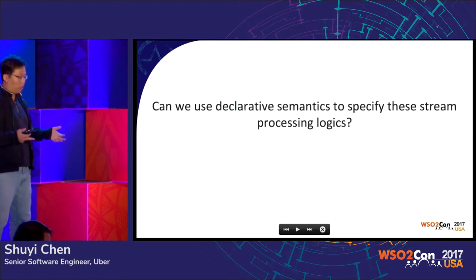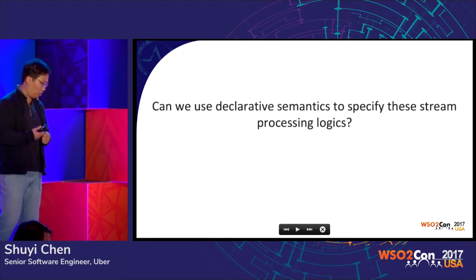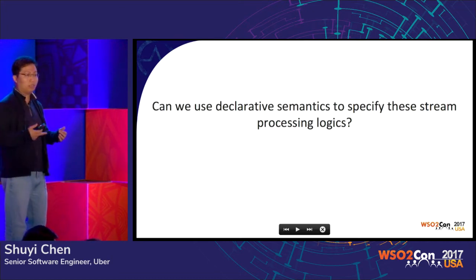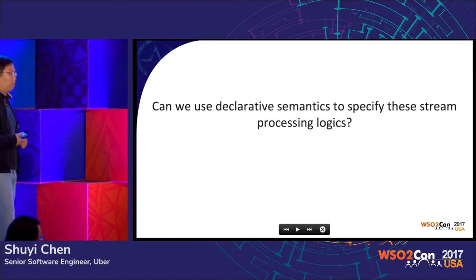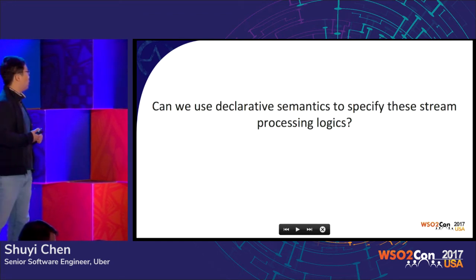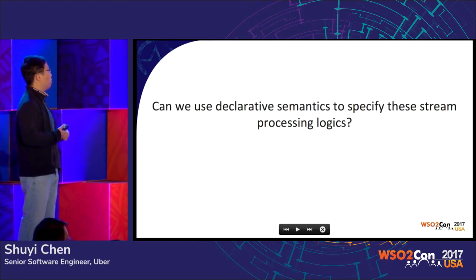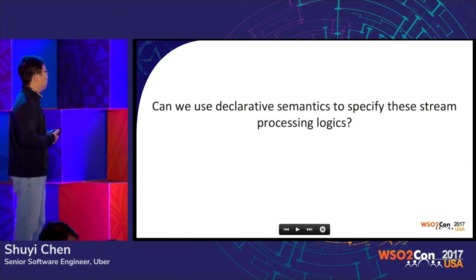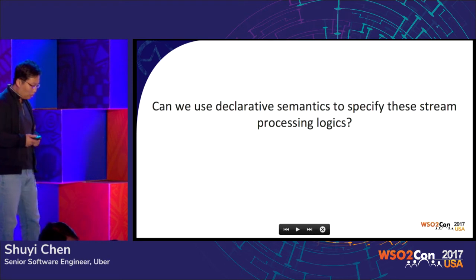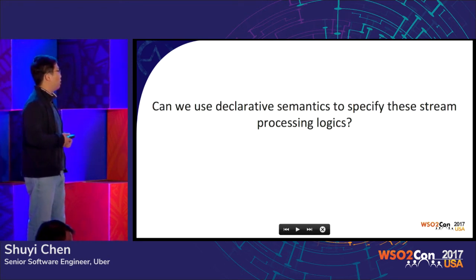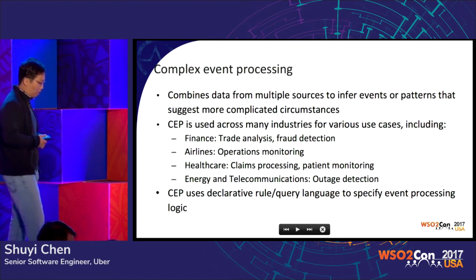So, can we make it more efficient? We borrowed a similar idea from the batch world where you can use SQL to query a database. The question we want to answer is: can we use some declarative semantics for real-time stream processing, to specify stream processing logic? The answer is actually already in the industry for over a decade, which is called complex event processing.